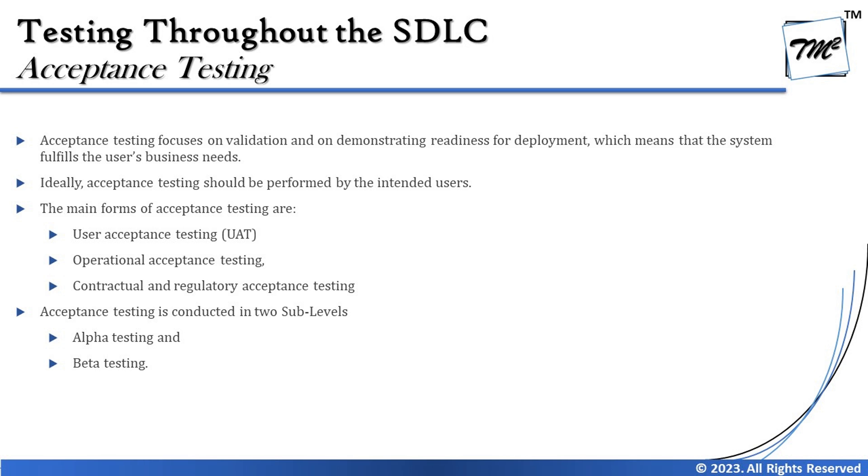Third, it's not always the case that a product needs functionality alone — contractual and regulatory acceptance testing is also performed. Some products must meet regulatory standards: for example, embedded systems, cell phones, laptops, and automobiles like cars, bikes, and two-wheelers all go through regulatory standard checks. If regulations are not met, the product will not go to market, as it would not meet the desired expectations.